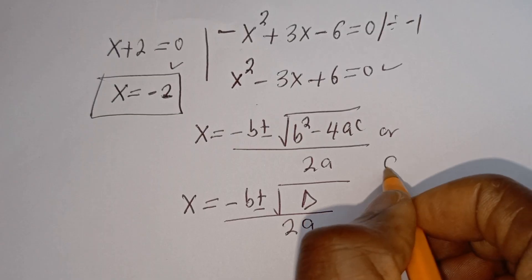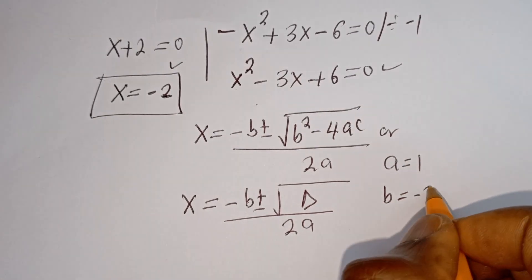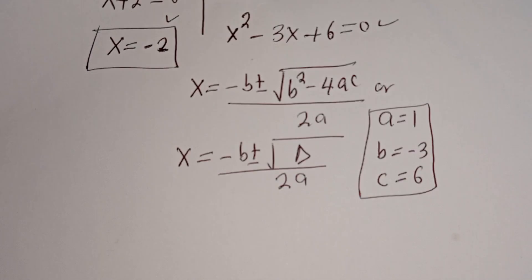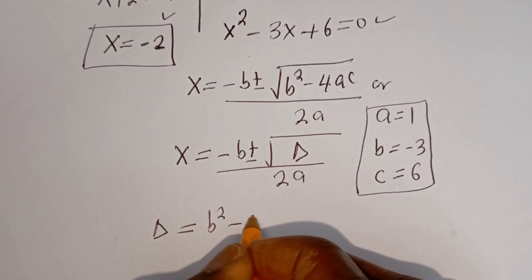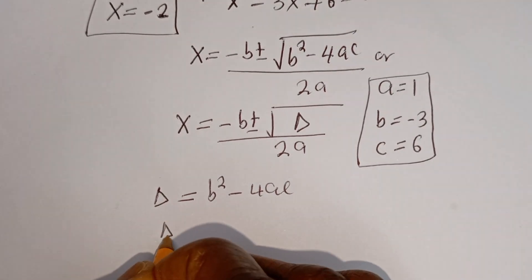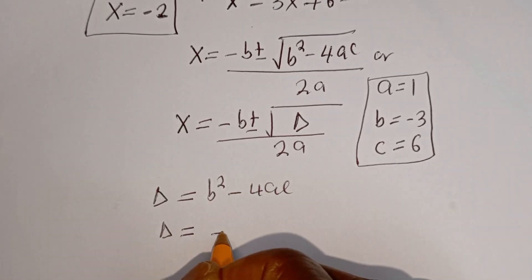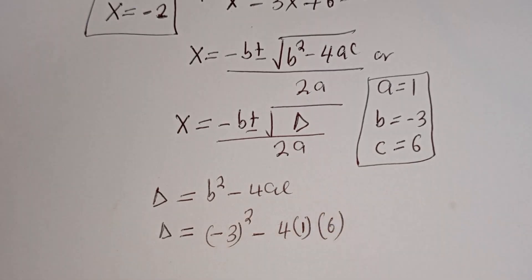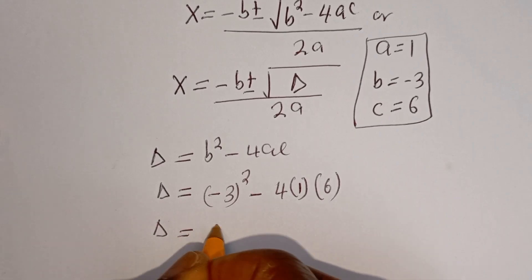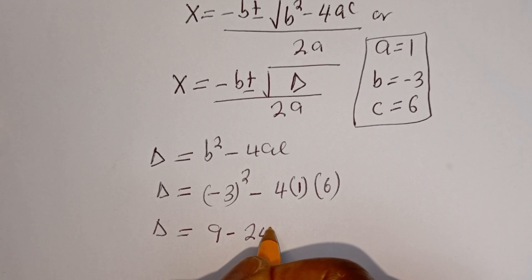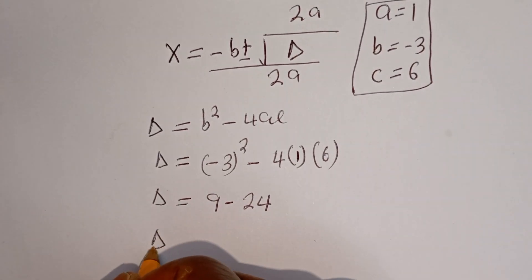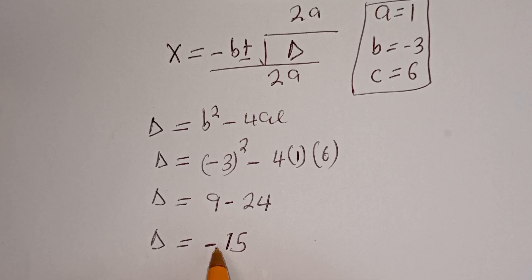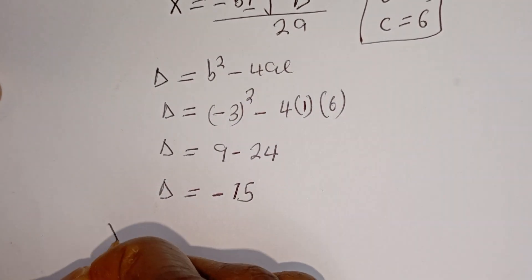From this equation A is equal to 1, B is equal to minus 3, C is equal to 6. Then the discriminant D is equal to B squared minus 4AC. D is equal to minus 3 squared minus 4 multiplied by 1 multiplied by 6. Then D is equal to 9 minus 4 times 1 times 6, that is 24. Then D is equal to 9 minus 24, that is minus 15.